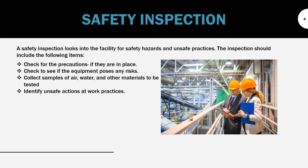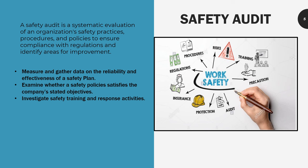Safety inspections look into the facility for safety hazards and unsafe practices. Inspections should include the following: check precautions to see if they are in place, check if equipment poses any risk, collect samples of air, water, and other materials to be tested, and identify unsafe acts and work practices.